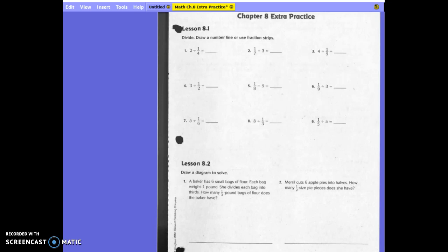So our number line is going to be from 0 to what? To 2. So in the middle would be 1. And what are we going to divide each of our spaces into? 4.